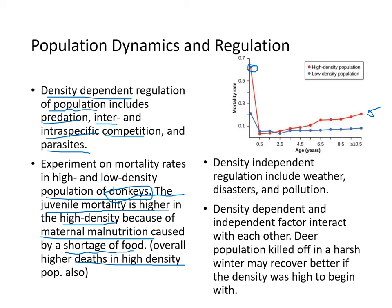Density-independent regulation includes weather, disasters, and pollution. Density-dependent and independent factors interact — for example, a deer population killed off in a harsh winter may recover better if the initial density was high enough, since enough individuals remain to repopulate.